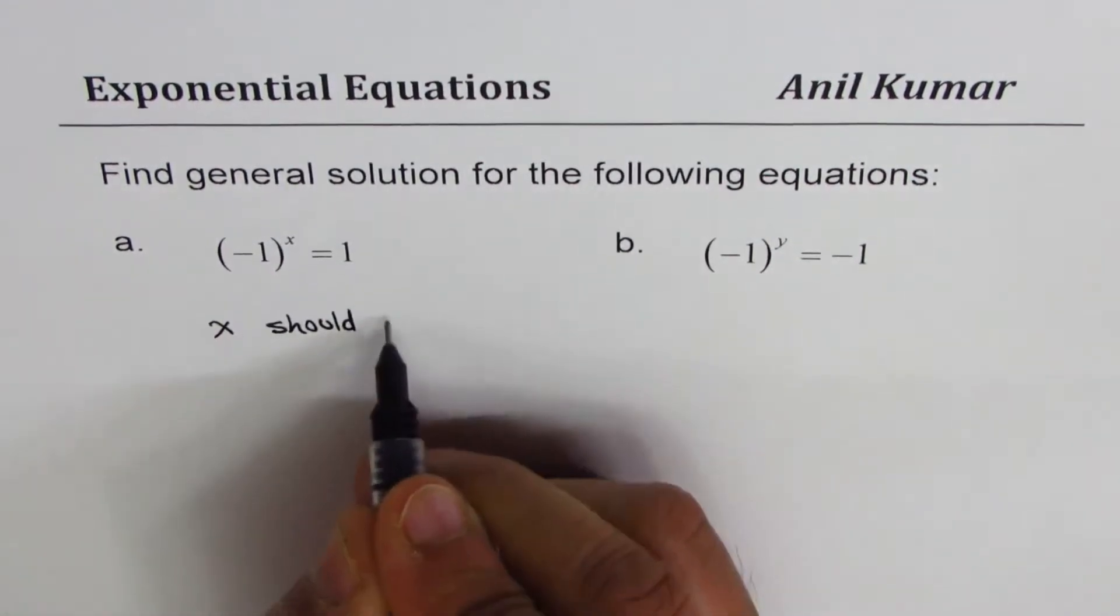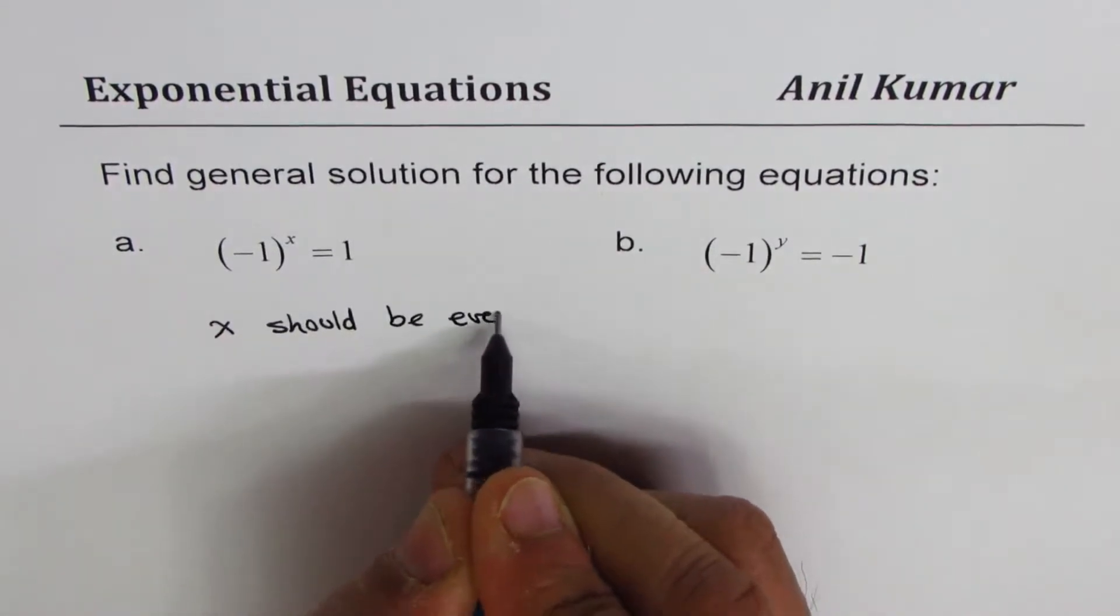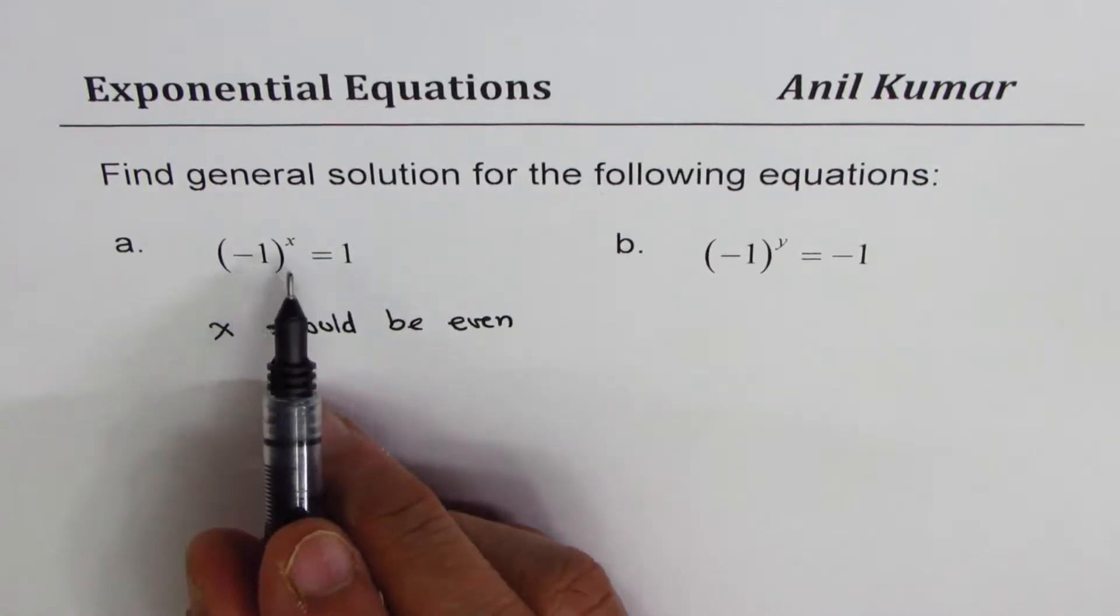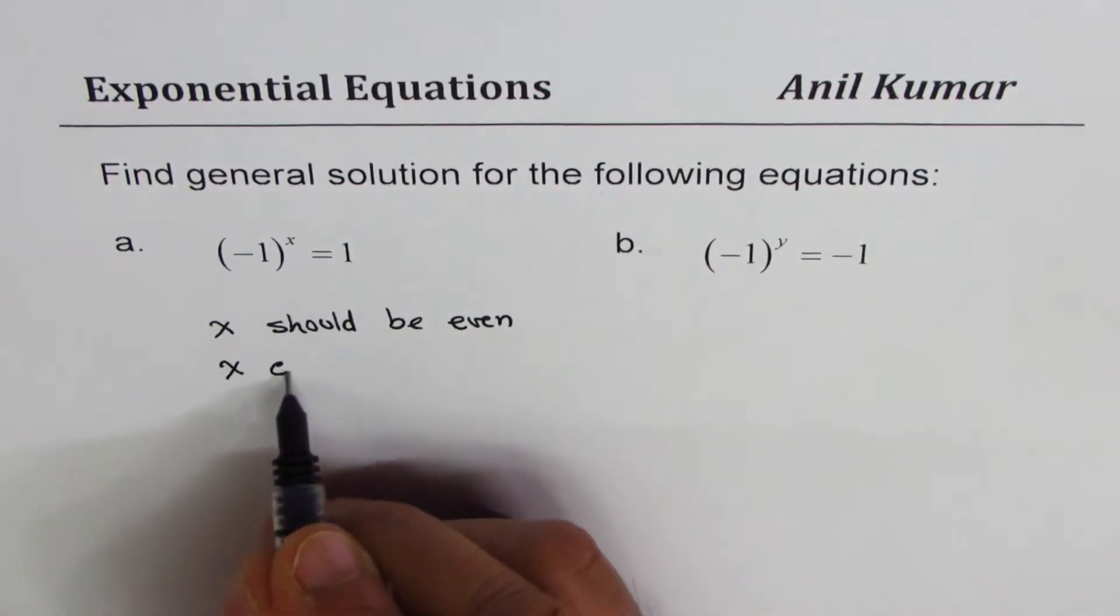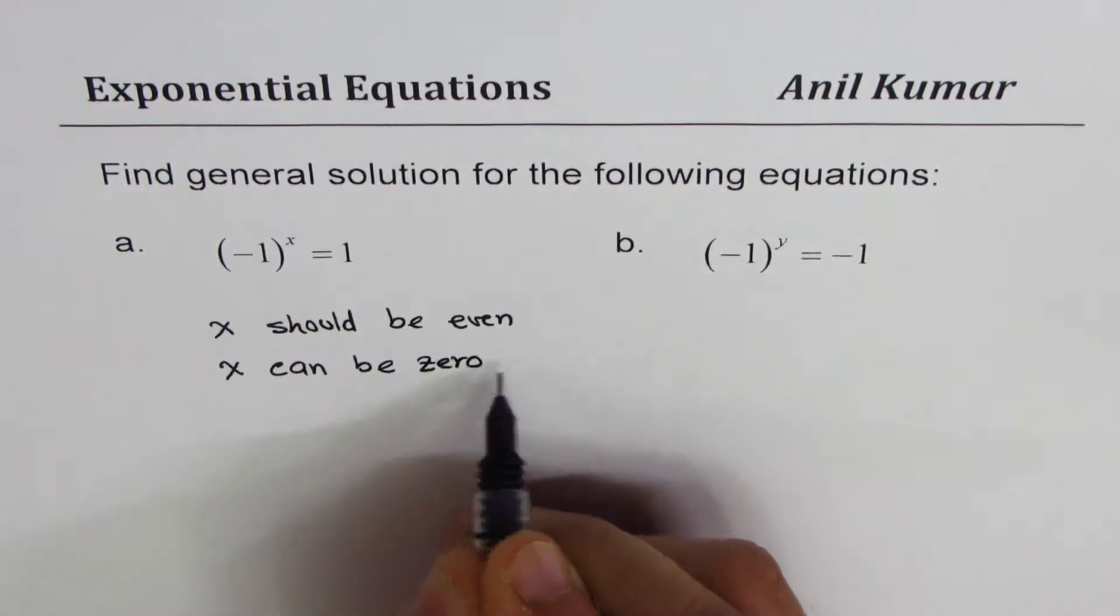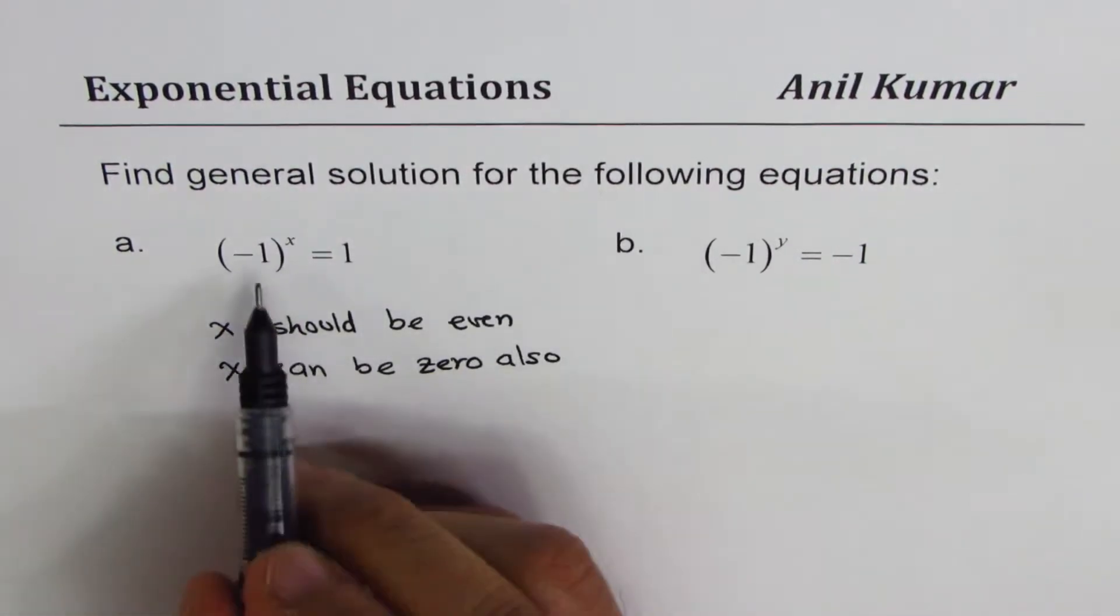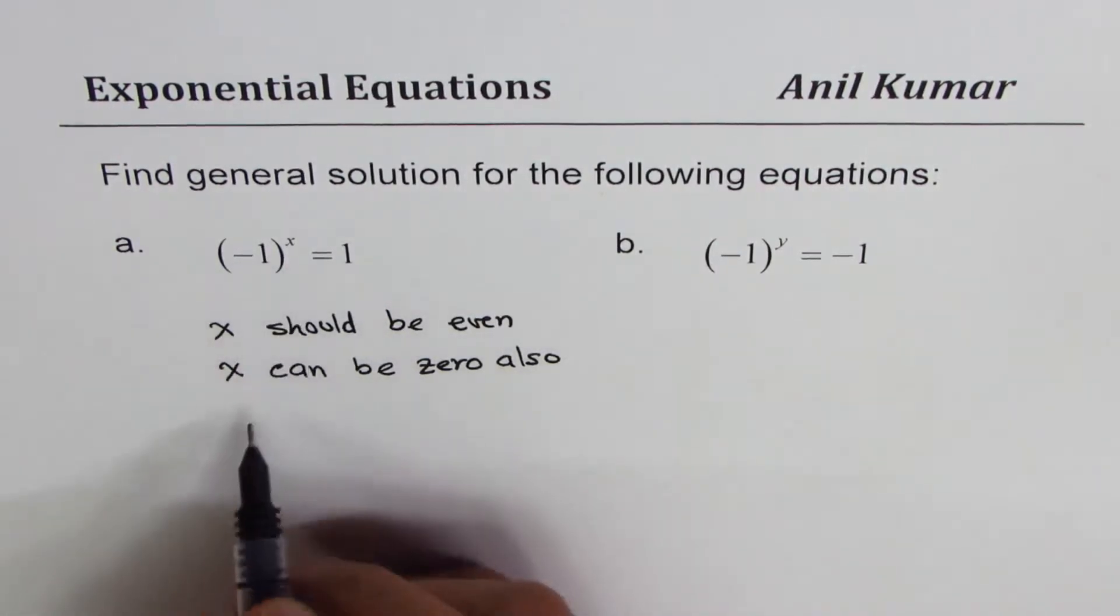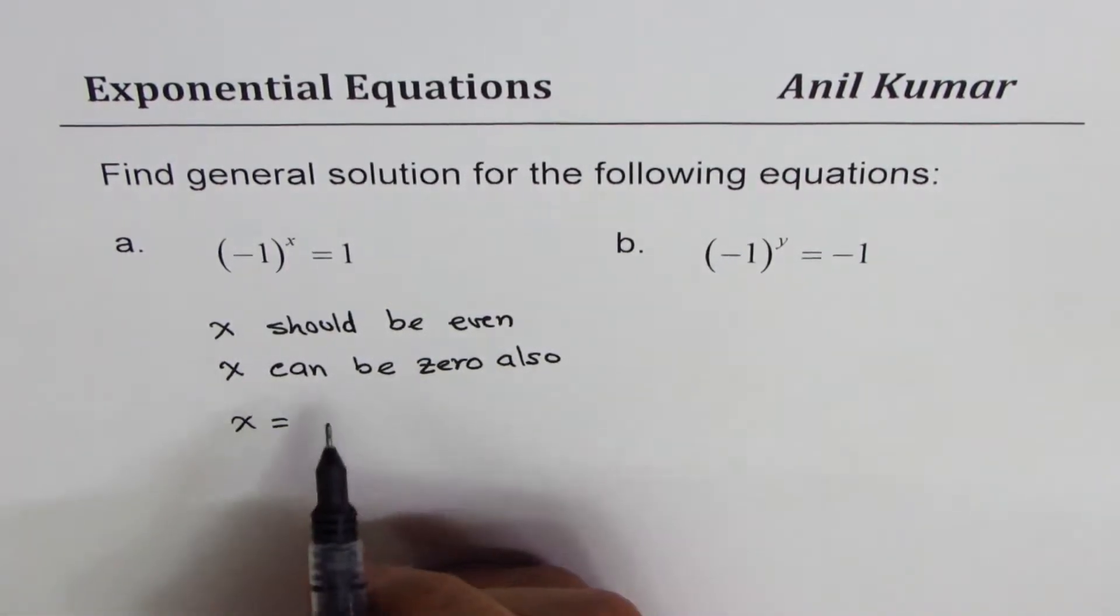x could be 0 also, right? x can be 0 also. Anything to the power of 0 is 1, correct. So that really means that x equals, in general we can write...